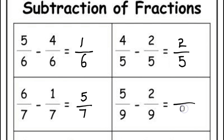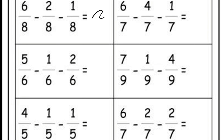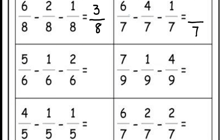The next answer: 5 minus 2 is 3, giving 3 by 9. Only the numerators will be subtracted and the denominator remains the same. For the next one, the numerators are subtracted: 6 minus 2 minus 1 equals 3, so the answer is 3 by 8. In the next fraction, the denominator is 7; numerators: 6 minus 4 gives 2, and 2 minus 1 is 1, so the answer is 1 by 7.